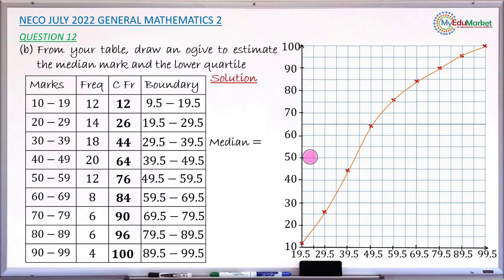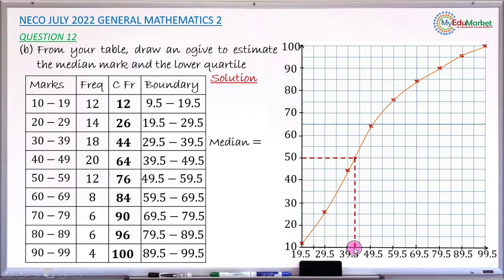Draw a horizontal line at cumulative frequency 50 until it touches the ogive, then drop down to the horizontal axis. The value there is the median mark. Between 39.5 and 49.5 there are 10 small divisions, each worth 1 unit. The line meets the curve three small divisions above 39.5, giving a median of 42.5.